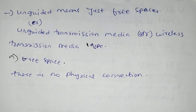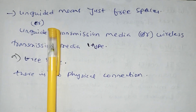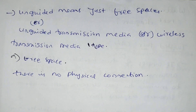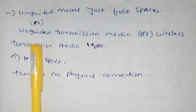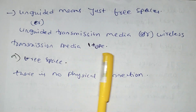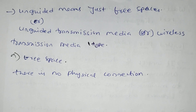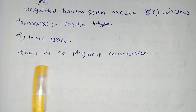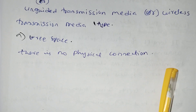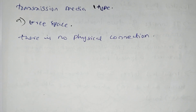Unguided means just free space. Unguided means wireless transmission media — without wire connection, free space — there is no physical connection, just radio waves connection.